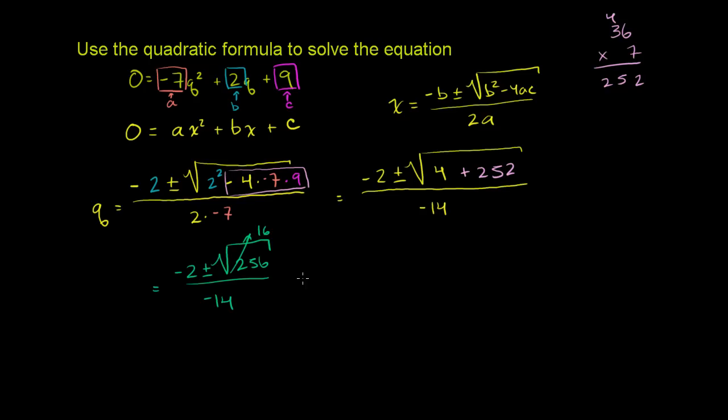So we can rewrite this as negative 2 plus 16 over negative 14, or negative 2 minus—this is plus 16 over negative 14, or minus 16 over negative 14. If you think of it as plus or minus, that plus is that plus right there, and that minus is that minus right there.